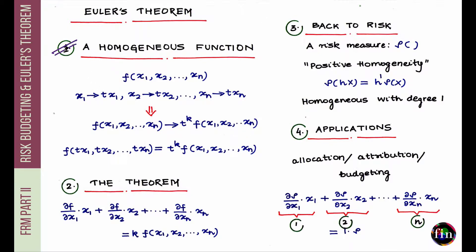Let me start by defining what a homogeneous function is. Assume there is a multi-variable function of n variables x1, x2, all the way till xn. Now imagine that I am scaling each of these inputs by the same factor t — that means x1 scales to t times x1, x2 to t times x2, and so on. You can scale up (t greater than 1) or scale down (t less than 1).